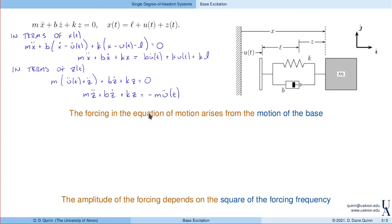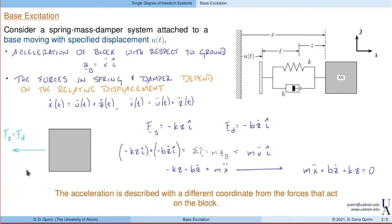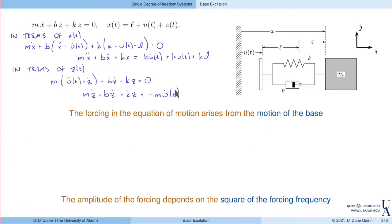I do want to make a distinction between the forcing in the equation and forces that are applied to the block. If we think back, the only forces applied to the block are from the spring and the damper, while the forcing in the equation of motion arises from the motion of the base. The fact that the forces are described differently than the acceleration with respect to inertial space is what gives rise to the motion of the block.